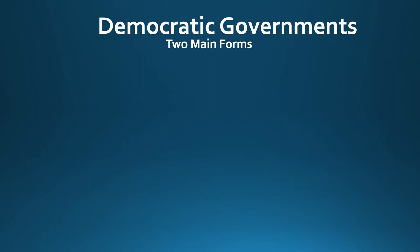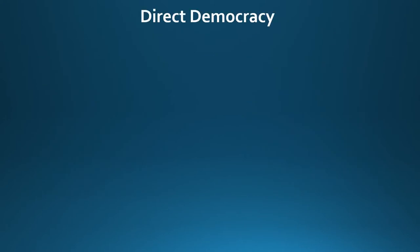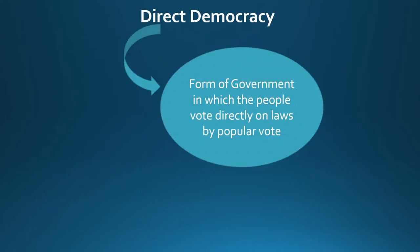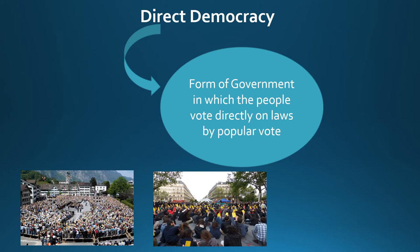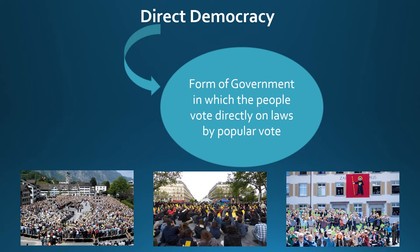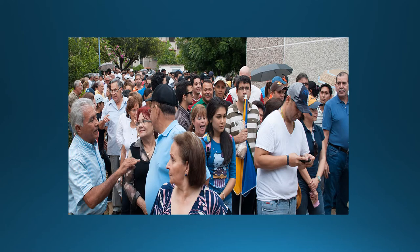There are two main forms of democratic governments: direct democracies and republics. A direct democracy is a form of government in which the people vote directly on laws by popular vote. Under this system, every law that is passed has to be approved by a direct vote from the people. Although most nations today have democratic forms of government, direct democracies are virtually non-existent at the national level because they do nothing to protect the rights of the minority and would require people to be voting frequently, which would be a major inconvenience for most people.